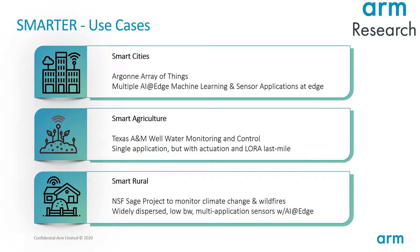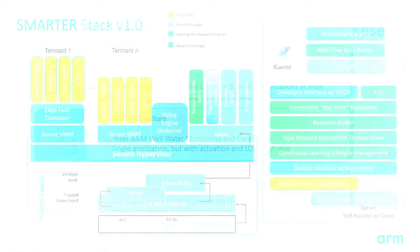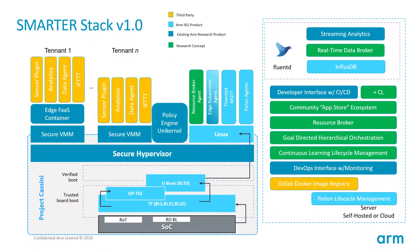The data is most probably processed at the edge, although in some cases it's backhauled to the cloud using 5G networks. This is the complete technology stack for the SMARTER project. On the left side you see the edge platform, which is the hardware that hosts and manages the firmware, secure booting of the operating system, hosts your virtual machines and containers, and orchestrates workloads within them. Here we interface the sensor arrays and deploy ML engines.